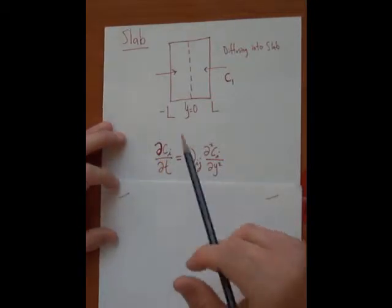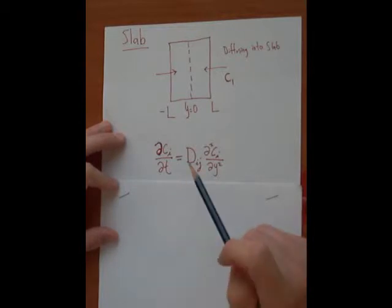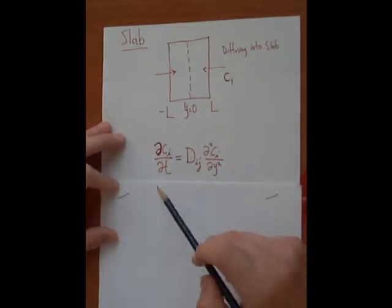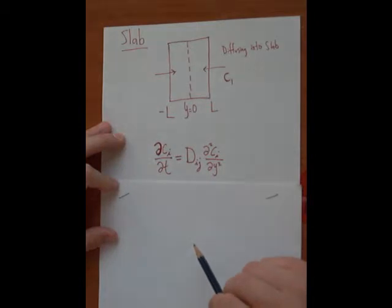So this equation here is a partial differential equation because concentration is dependent upon two variables, both time and position. So it's going to be a little bit trickier to solve, but we'll work through that in a little bit.